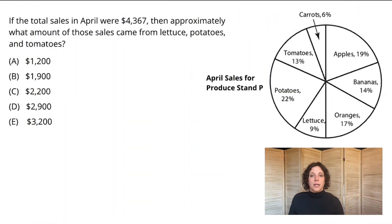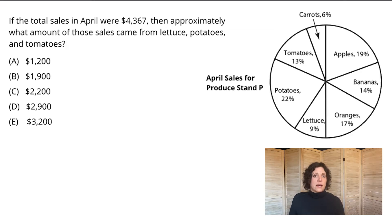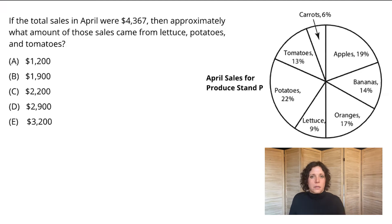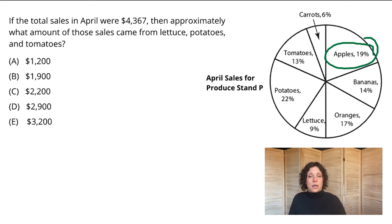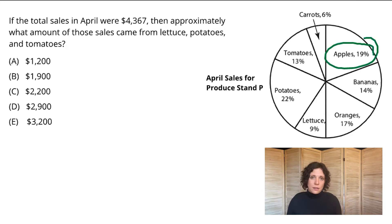So for any data interpretation problem, the first thing you want to do is spend a few moments familiarizing yourself with the graphs. In this case, we've been given a pie chart that tells us about April sales for produce stand P and the variety of fruits and vegetables that are sold there. I like to take a moment just to pick a specific data point, read it back to myself, and make sure that I understand what it means. So in this case, the fact that apples are 19% means that whatever the total sales are at this produce stand, to find apples, I would just take 19% of that number. So I feel like I understand the graph, now it comes time to work on the problem itself.